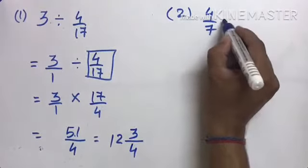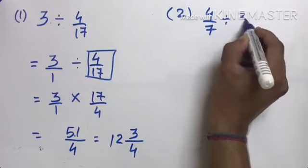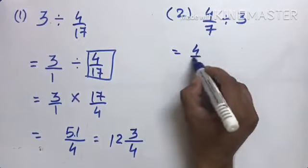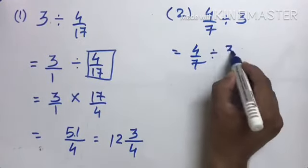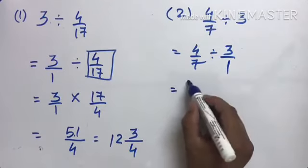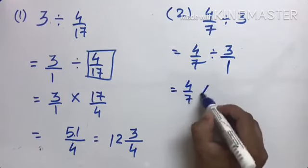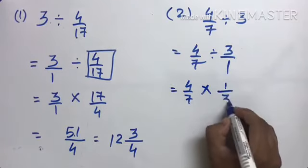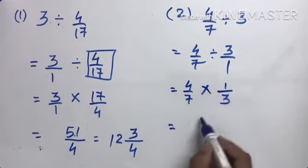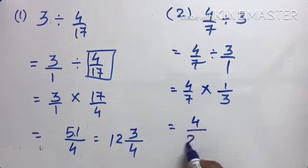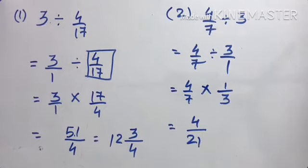Next question: 4 by 7 divided by 3। पहले इसको लिखते हैं 4 by 7 divided by 3 by 1। अभी divide का multiply करना है, तो 4 by 7 multiply — पीछे का जो भी number है उसका reciprocal — 1 by 3। So 4 × 1 = 4 और 7 × 3 = 21। Answer: 4 by 21।